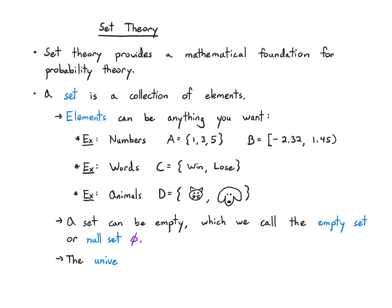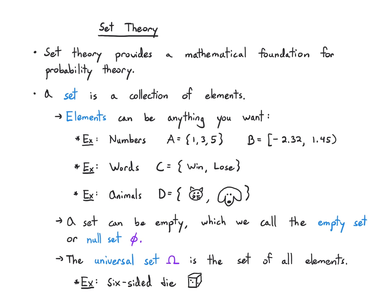We also have the universal set, denoted with a big omega in purple, and that is the set of all elements. As an example, consider a six-sided die — you roll it, and you could see 1, 2, 3, 4, 5, and 6. The elements in the universal set are for the specific context you have. In this six-sided die example, I didn't write down cat and dog because the only things that matter in that context are these six numbers — it's really only the things you're going to see in the situation you're concerned about.